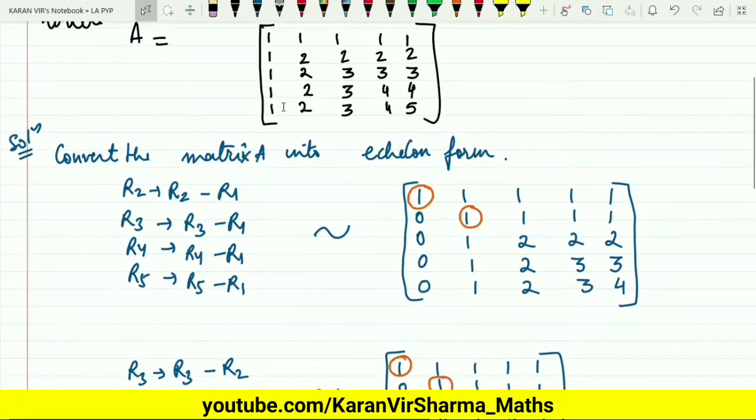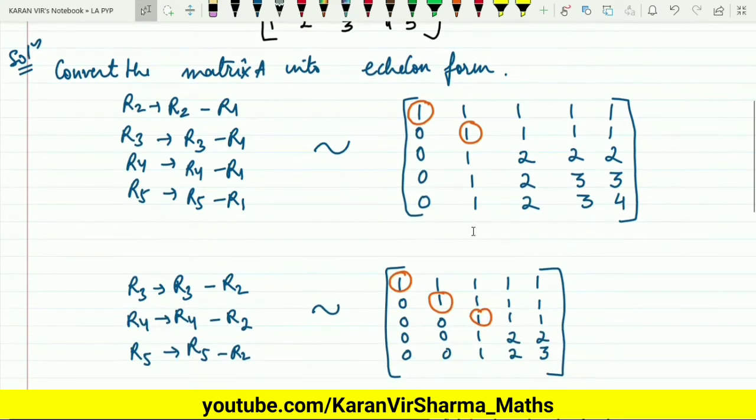I'll subtract row 2 from row 1, similarly row 3 from row 1, row 4 from row 1, and row 5 from row 1. You will be getting this matrix. Now you can check the pivot position. This is the first pivot position.